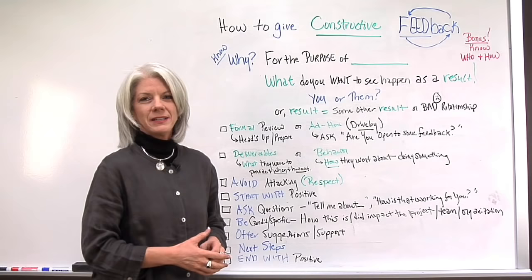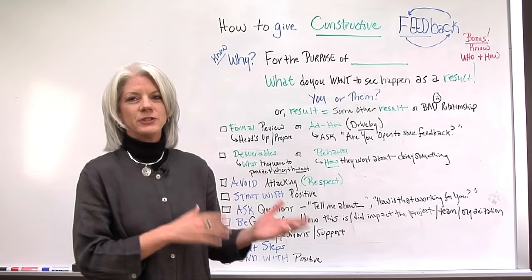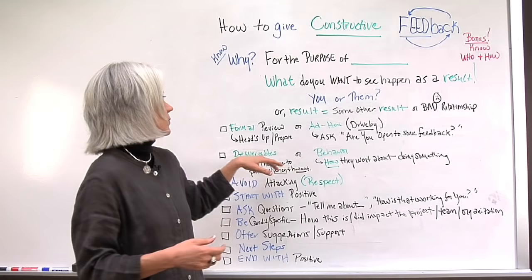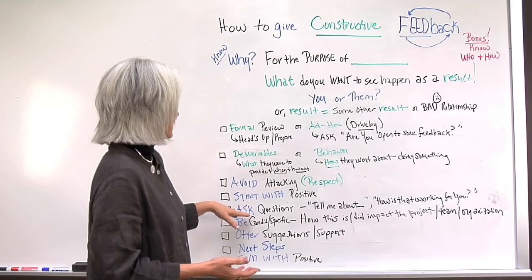And start with the positive. So it's good to acknowledge people for all the good things we do. I know on our teams that if we're always attacking the things that they do wrong, they're just going to run and avoid you. So acknowledge the things that they're doing well and start with something positive, or even something positive about whether it's a deliverable or behavior. You know, I noticed you did this part of the deliverable really well, but it looked like you were struggling with another piece.